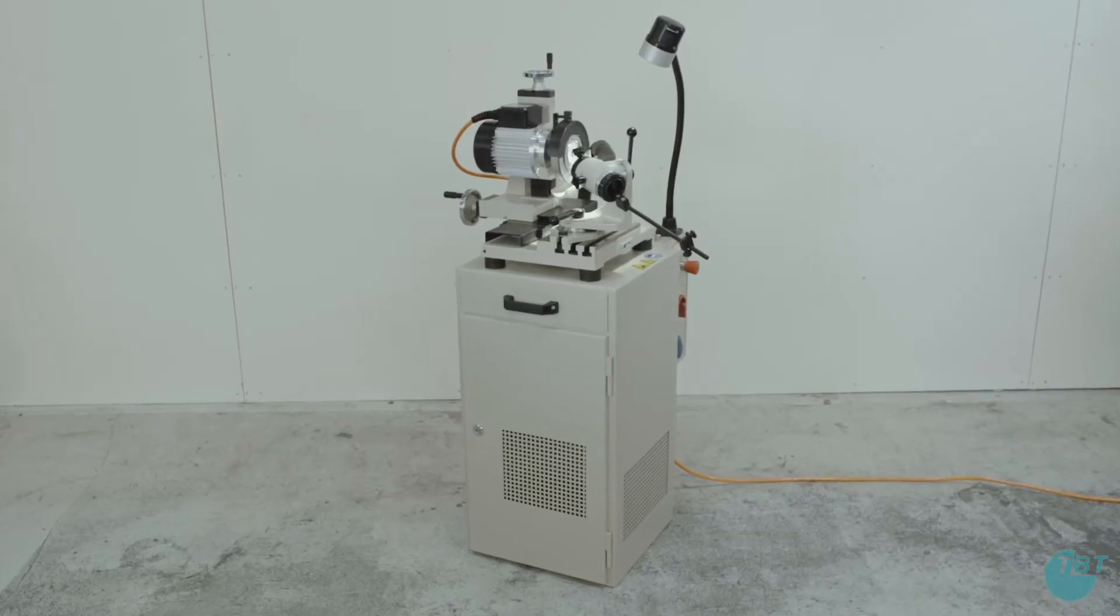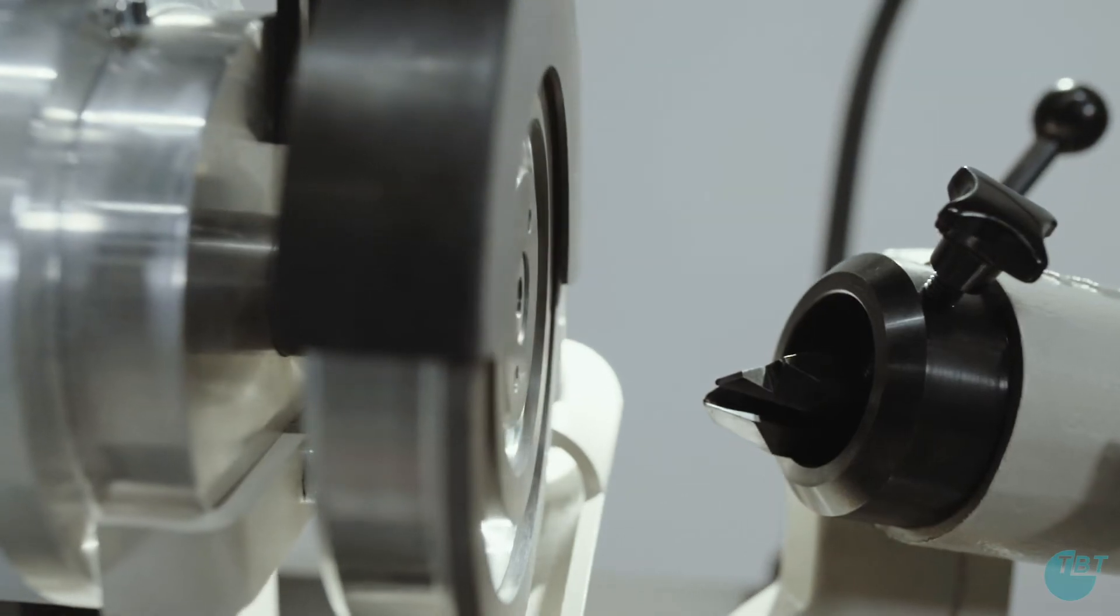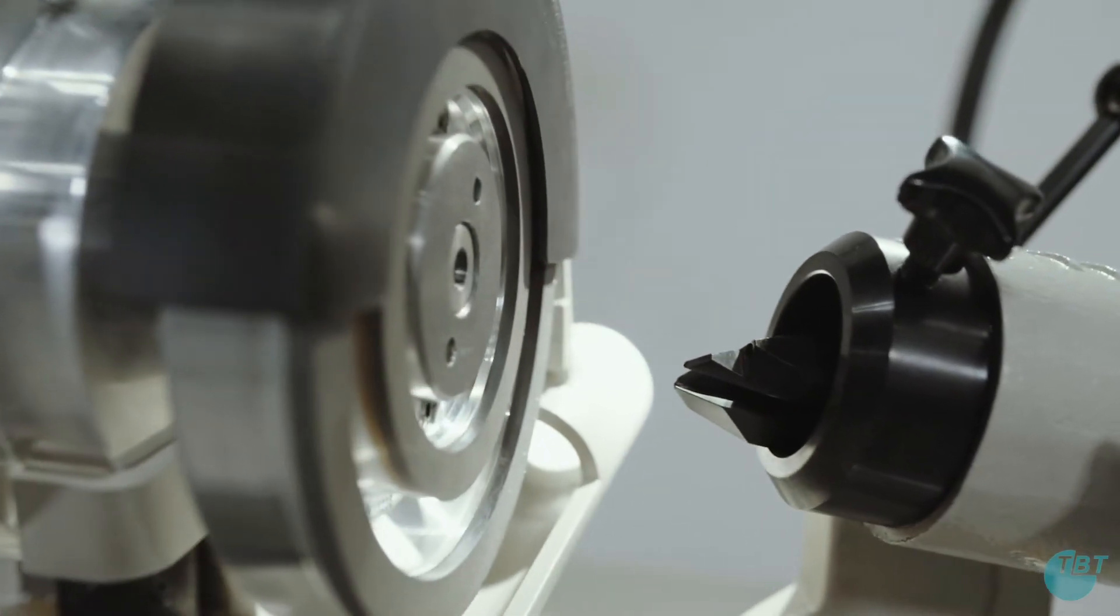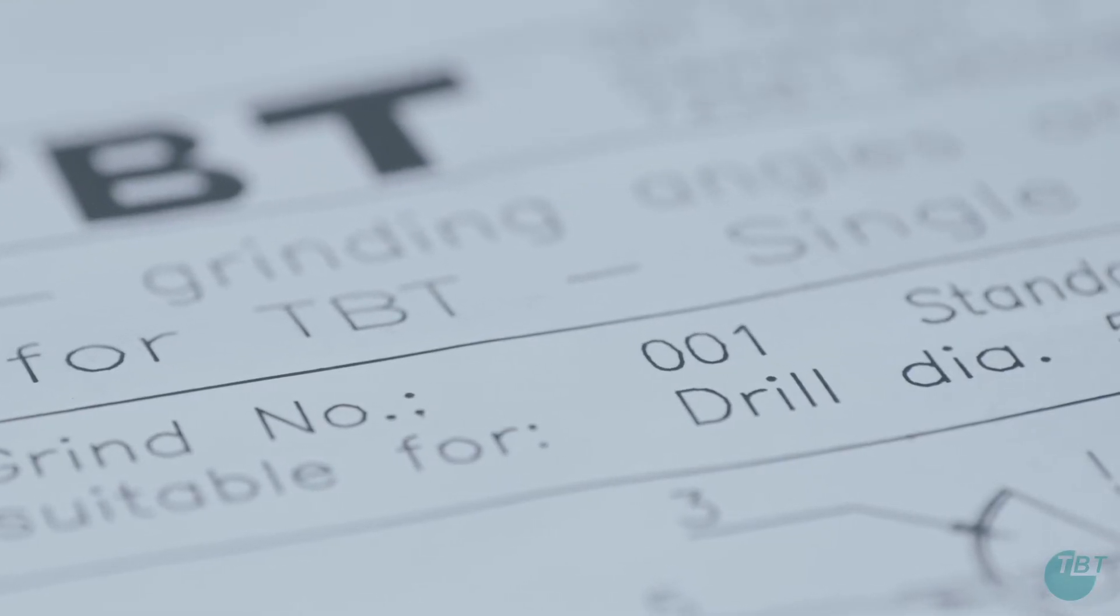This is a universal grinding machine from TBT. With this three axis machine various grindings can be done on single lip drills. Today we show you the TBT standard grinding 001.